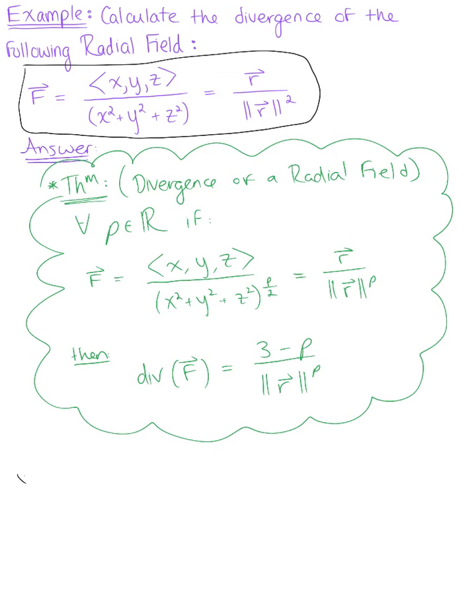So the first thing I want to do is looking at this given radial field, we want to identify what is P, what is that real number? So looking at this here, we can see that our magnitude of R is squared, implying that P is equal to 2.